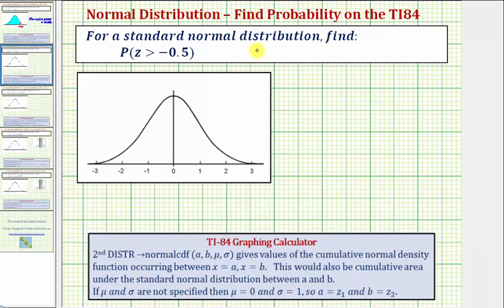Welcome to an example on how to use the newer version of the TI-84 to determine the probability of a z-score being less than a given value for a standard normal distribution.